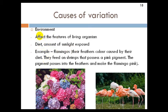For example, the flamingo — their feather colour is caused by their diet. Usually when flamingos are born, they are white. However, their diet consists of a type of shrimp, and those shrimp give the feathers a pink colour because the shrimp contain a pink pigment. The pigment passes into the feathers of the flamingo and makes them appear pink.